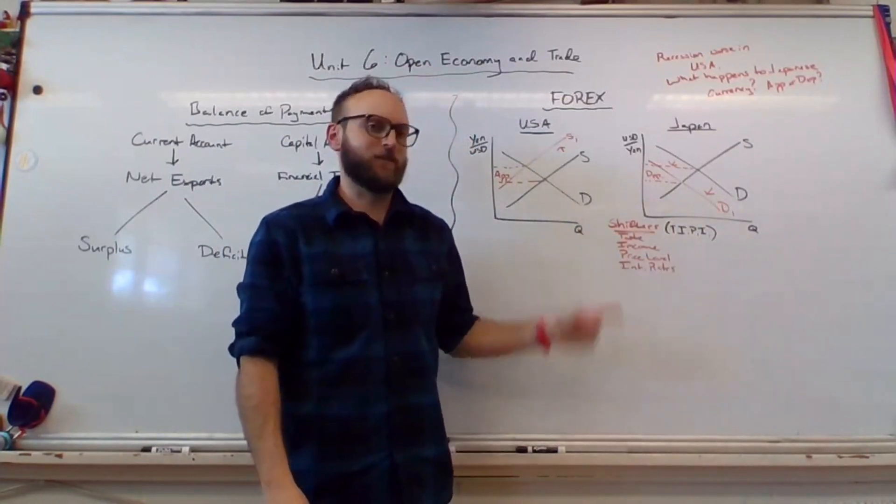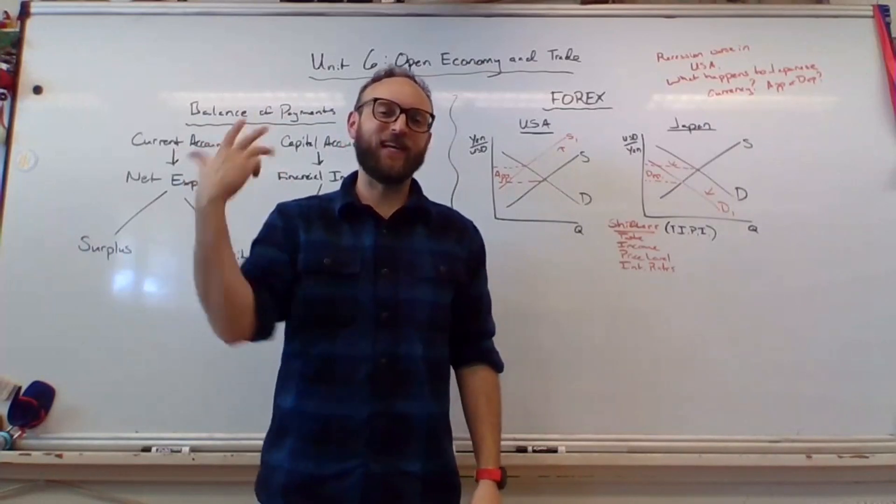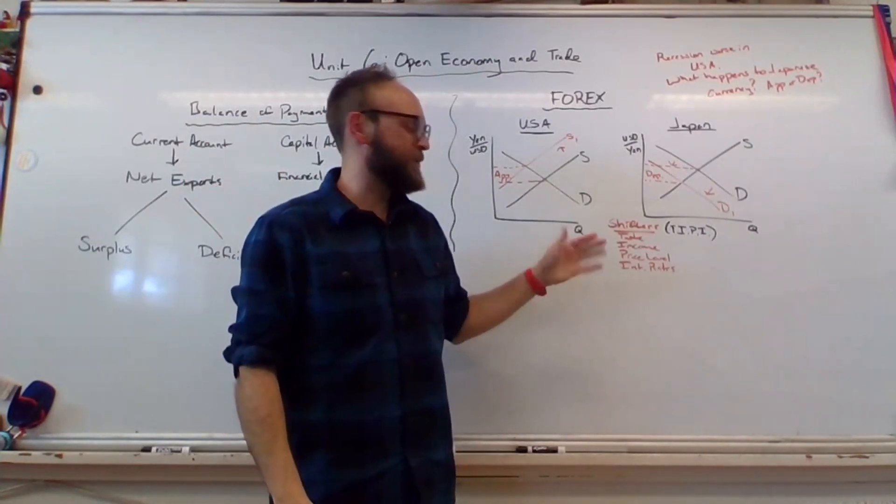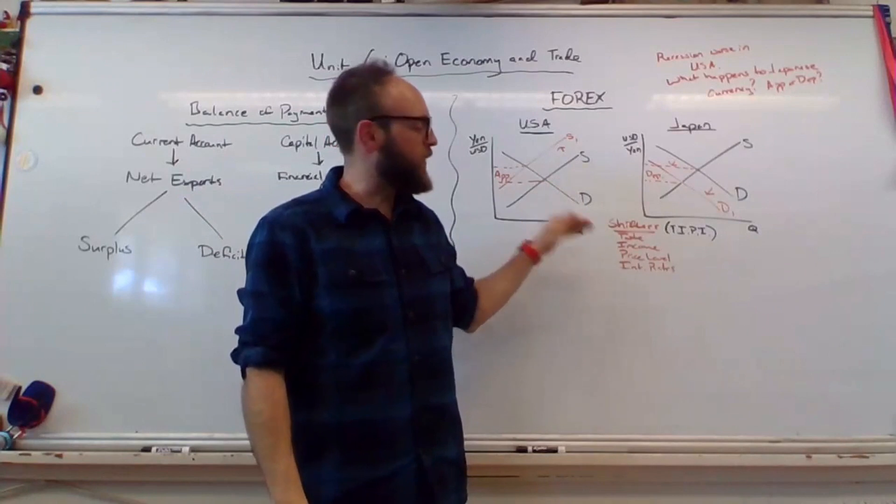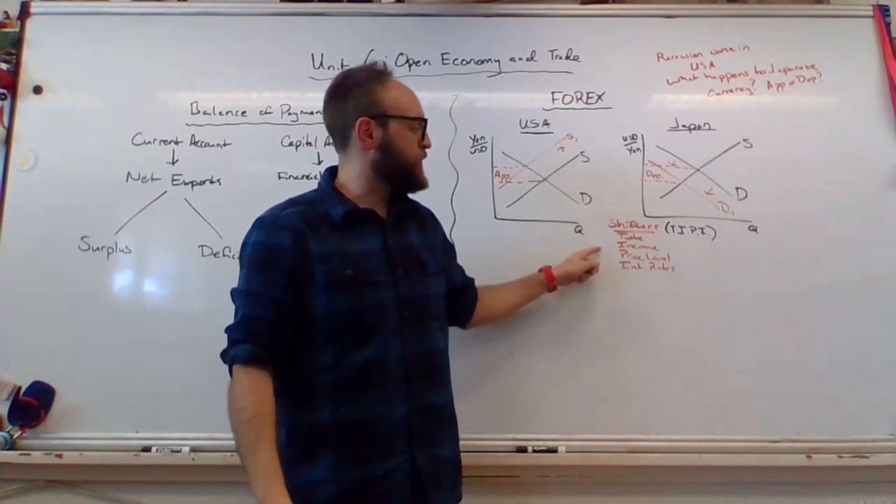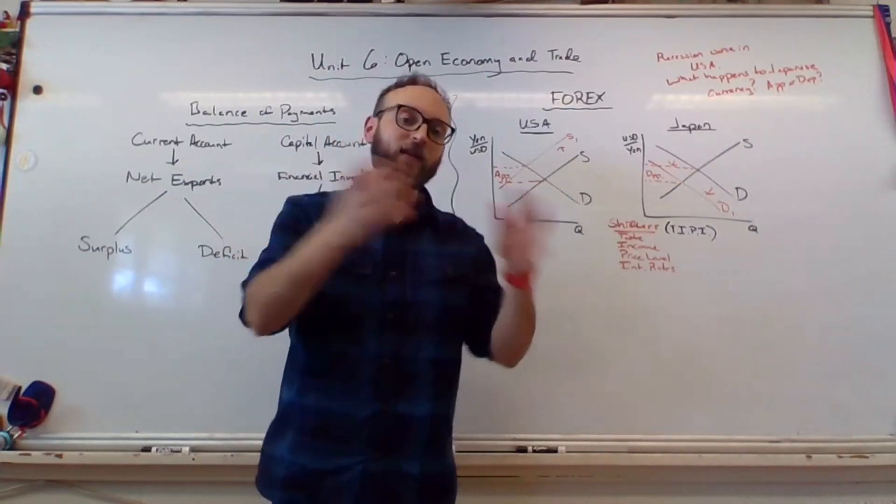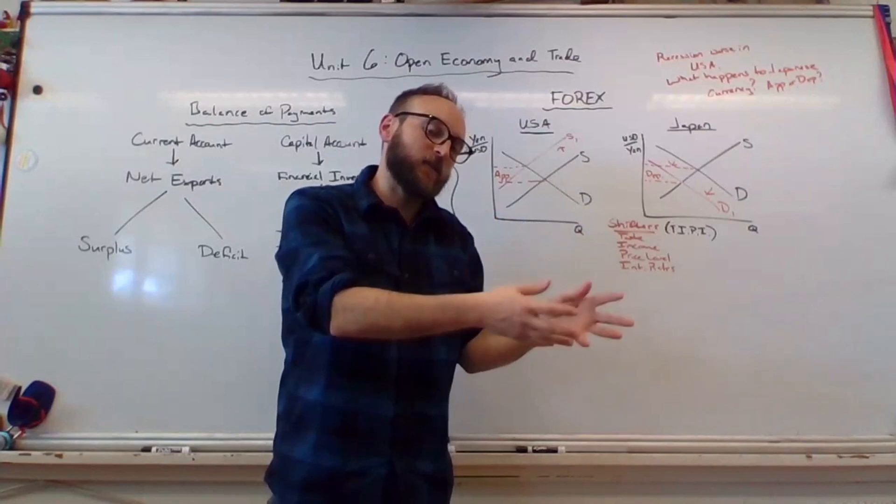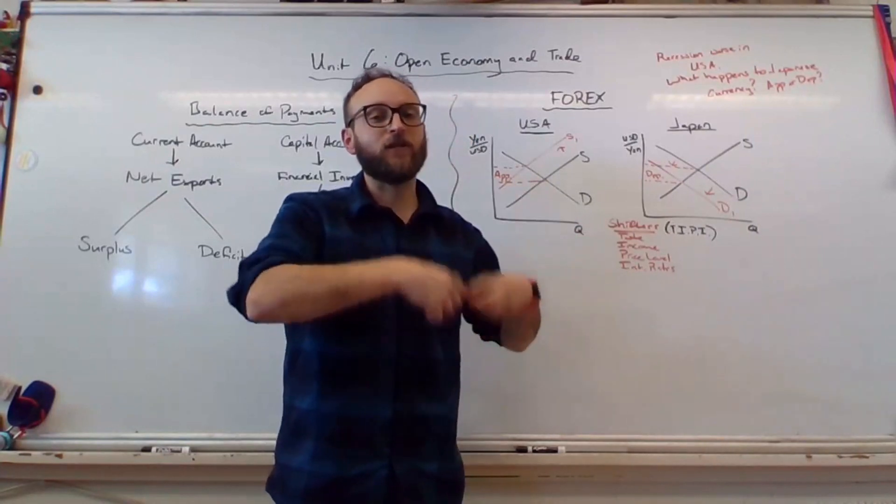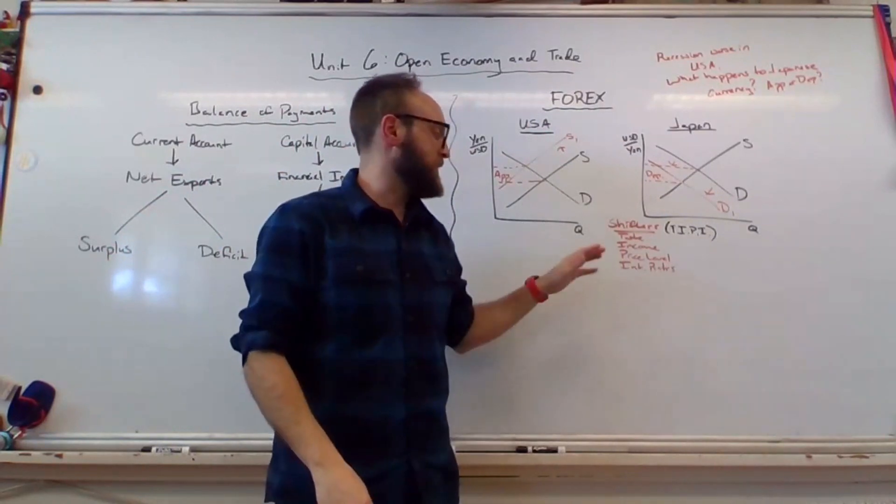There are only four shifters in Forex: taste, income, price level, and interest rates. For the most part, they're fairly self-explanatory. If you want something, then there's more taste for it, more demand. With income and price level, just remember that the demand goes downhill and that rich people can afford less expensive countries, but less expensive countries, recession countries, cannot afford the more expensive countries. That's kind of the same logic.